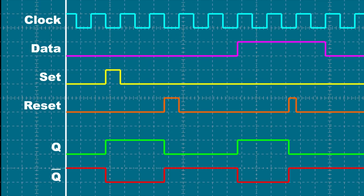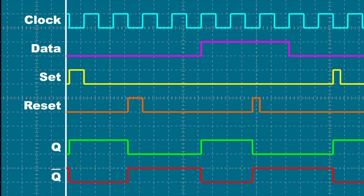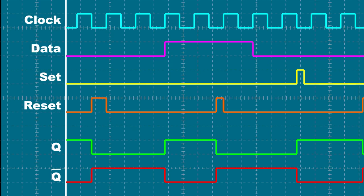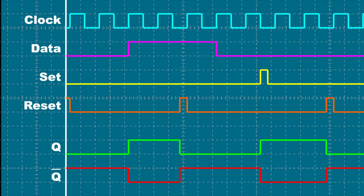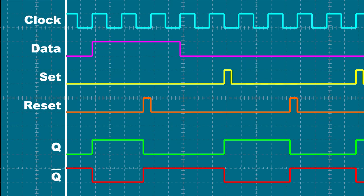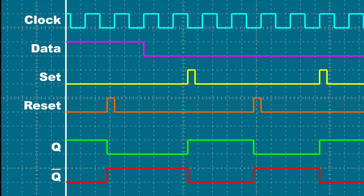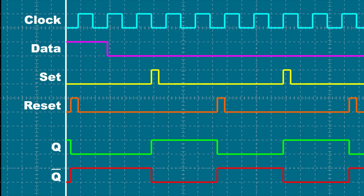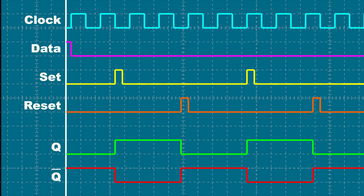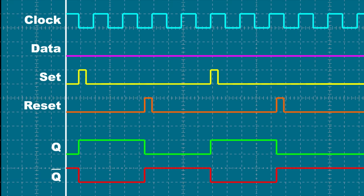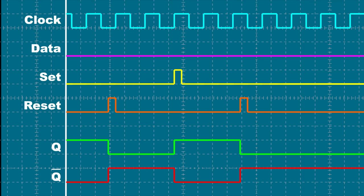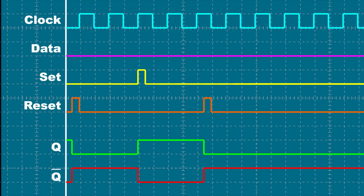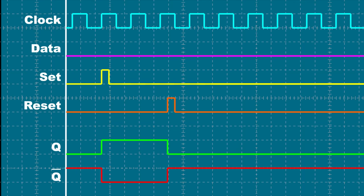In these flip-flops, the set and reset inputs are asynchronous. They have priority over the clock signal and can affect the outputs at any time. While the data signal has to wait for the next clock pulse before it affects the output, as soon as set goes active high, it makes the output go high. And anytime reset goes active high, it resets the output back to low.